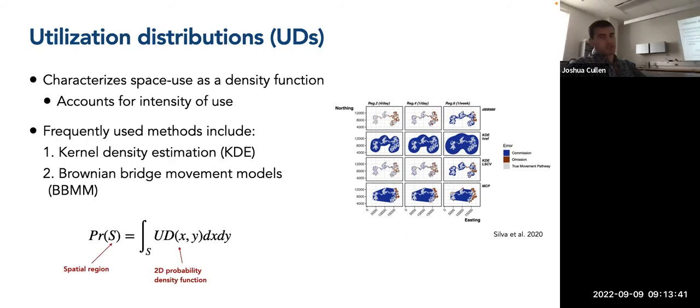So these are the two major methods I'll be covering regarding the estimation of utilization distributions today. And this figure on the right from Silva and colleagues from 2020 shows the estimation of UDs from different types of methods. So the top row is showing estimates from a dynamic Brownian bridge movement model. The second row is kernel density estimates using a reference bandwidth estimator. The third row is kernel density estimation using a least squares cross validation method. And the bottom row is minimum convex polygons. And these colors are denoting the commission, so the inclusion of points along a simulated track or the omission or not including a set of points. Each column is a different time interval that was used essentially. So making a comparison among these different available methods.